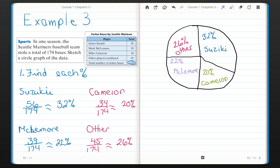I see that Suzuki has the largest percentage, so he has the largest piece of the pie. Cameron has the smallest percentage, so he has the smallest piece of the pie. The others have a quarter plus 1%, and McLemore has just under a quarter at 22%.